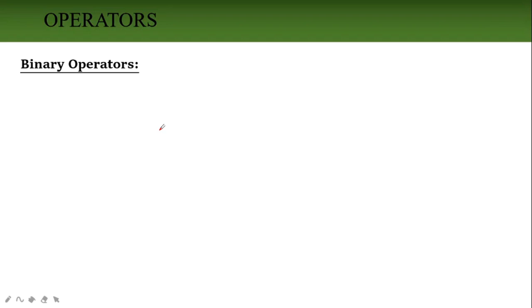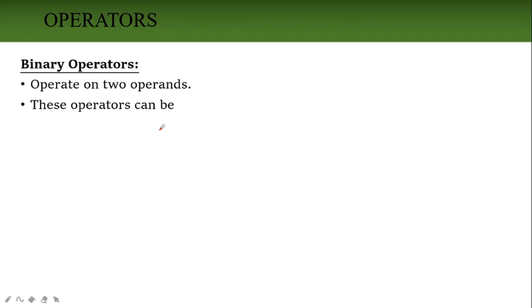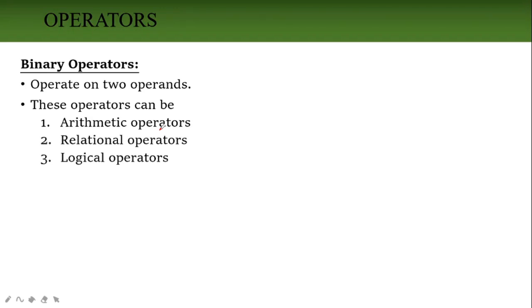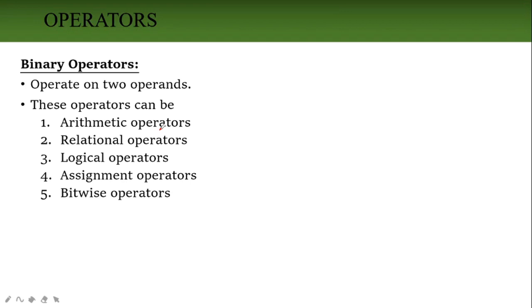Next, binary operator — binary means two. It operates on two operands. In binary operators there are many operators: arithmetic operator, relational operator, logical operator, assignment operator, and bitwise operator. Let's see them one by one. First, arithmetic operator.